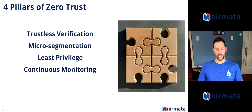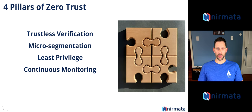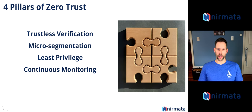The next pillar is micro-segmentation. Think of them as network level firewalls, but on steroids. They're granular Kubernetes resources that we are able to define and utilize. The big emphasis that micro-segmentation places on is reducing lateral movement in the event - the inevitable event - of a breach.